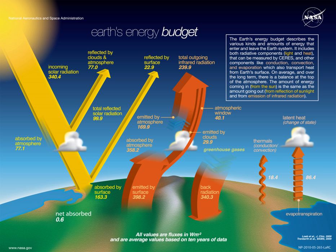Changes in surface temperature due to Earth's energy budget do not occur instantaneously, due to the inertia of the oceans and the cryosphere. The net heat flux is buffered primarily by becoming part of the ocean's heat content, until a new equilibrium state is established between radiative forcings and the climate response.